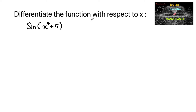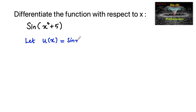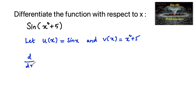Differentiate the function sin(x² + 5) with respect to x. This is the composition of two functions: let u(x) = sin(x) and v(x) = x² + 5. So sin(x² + 5) is the composition of these two functions.